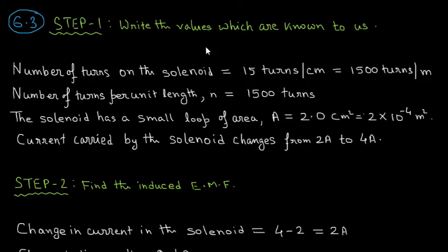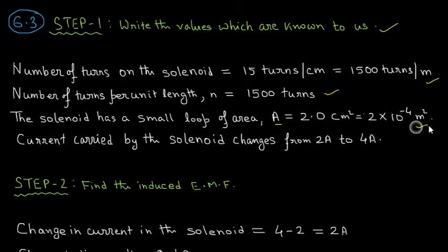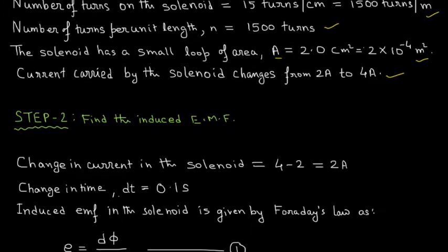Step one: write the known values. Number of turns on the solenoid is 15 turns per centimeter, converted to 1500 turns per meter. The small loop area A is equal to 2 cm², which is 2 × 10⁻⁴ m². Current carried by the solenoid changes from 2 ampere to 4 ampere, so the change in current is 2 ampere. The change in time dt is equal to 0.1 second.